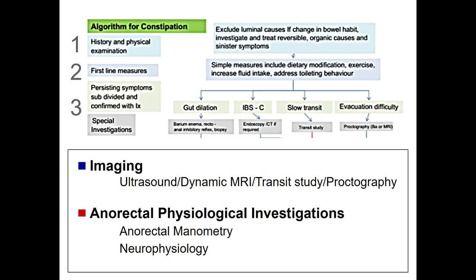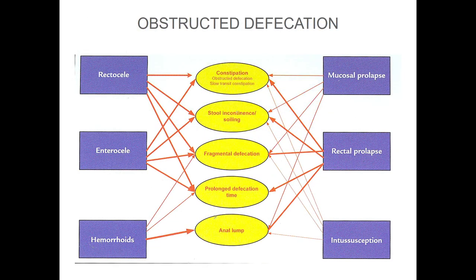Which kind of imaging? Ultrasound, MRI, transit study, evacuation proctography. Or which kind of physiological investigation? Anorectal manometry or neurophysiologic study. Why do we need imaging? Because constipation is a symptom.